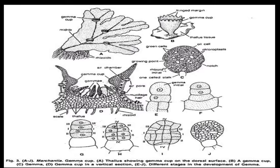This is the complete single gemma found in the gemma cup cavity. The mature gemma shows green cells, oil cells, chloroplasts, a centrally placed notch as the growing point, specialized cells for rhizoidal development, and at the base a single-cell stalk. Here is the development of a gemma cup.